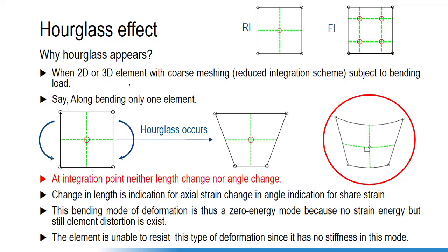When a 2D or 3D element has coarse meshing, if we have very fine meshing there is maximum chance that hourglass phenomena will not occur. But if we have coarse meshing, and the integration scheme used is reduced integration, and the component is subject to bending load — this phenomenon may occur with high probability. One important thing: for second order or quadratic elements, we don't have such an hourglassing effect.